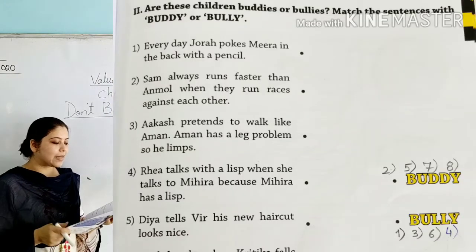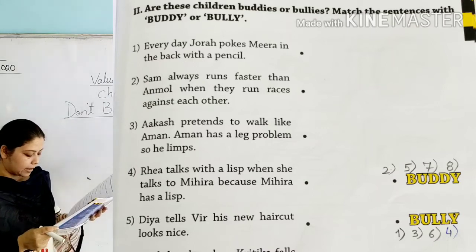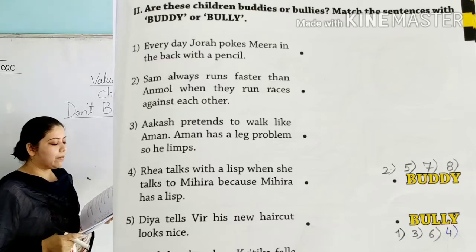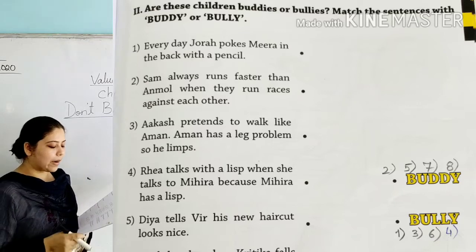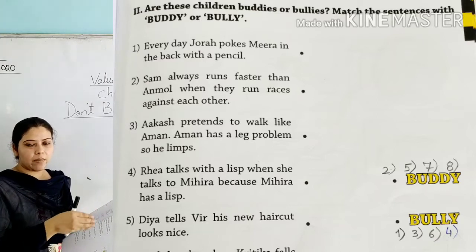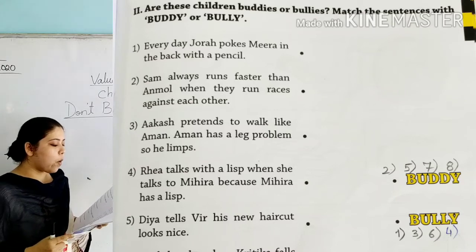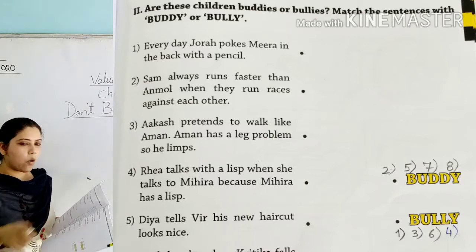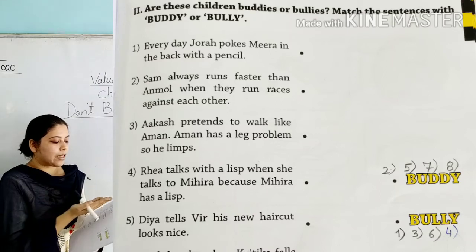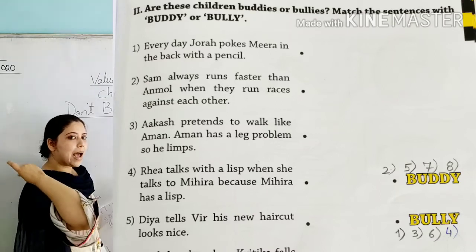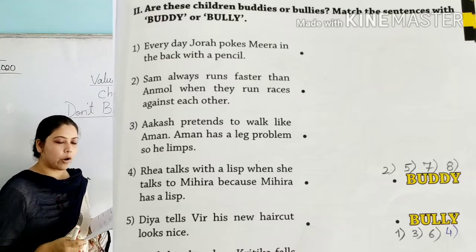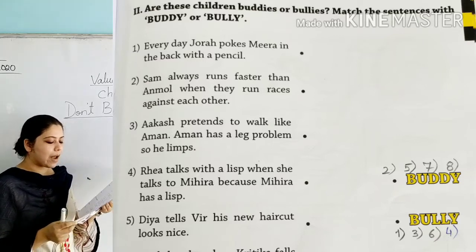Now we move to the next exercise — Exercise 2, page number 39: 'Are these children buddies or bullies?' Match the sentences with the word buddy or bully. While reading each sentence you have to decide whether it is talking about a buddy or a bully. 'Every day, Jora pokes Neera in the back with a pencil.' This is absolutely not a friend, not a buddy — it is a bully. So we will write bully.